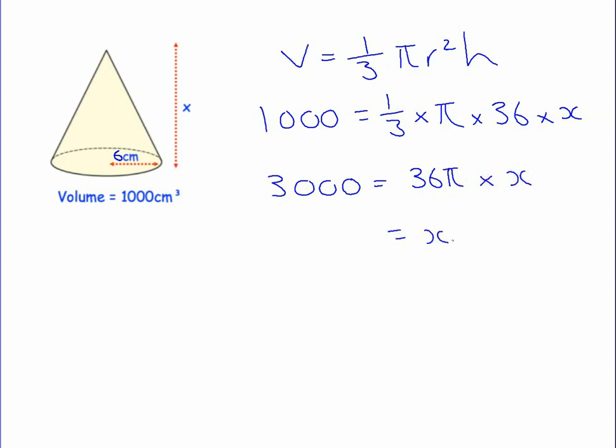So x, to get x on its own, which is the height, I'm going to divide by 36 pi. Now, those numbers aren't friendly. So that is it in terms of pi. Let's just type that in. What do we get? And I'm going to round this one to three significant figures. That's 26.5. There's three significant figures. And the units are in centimeters, because our volume is in centimeters cubed.